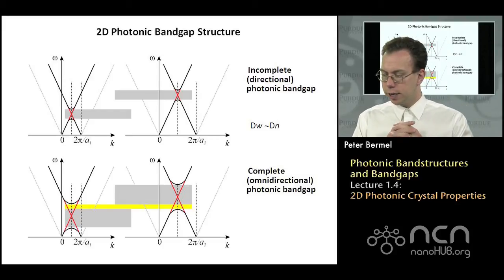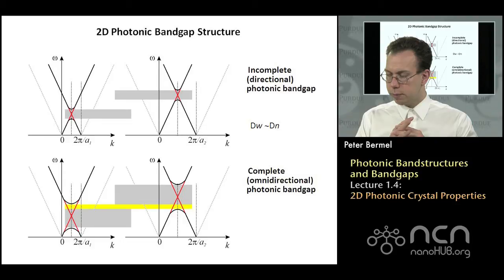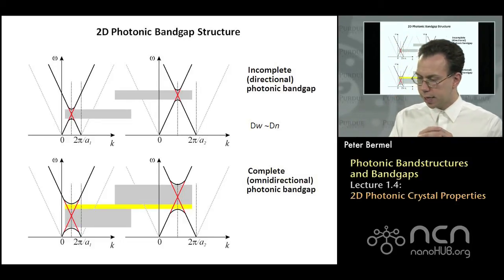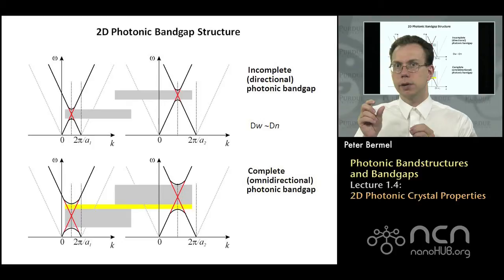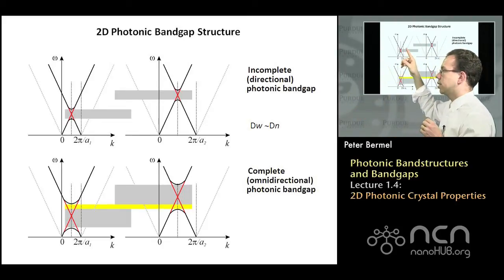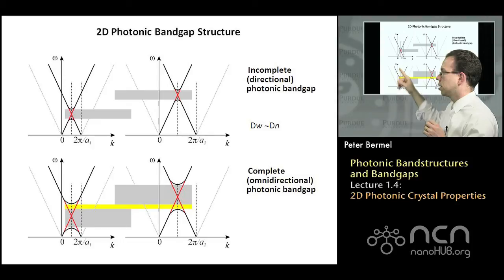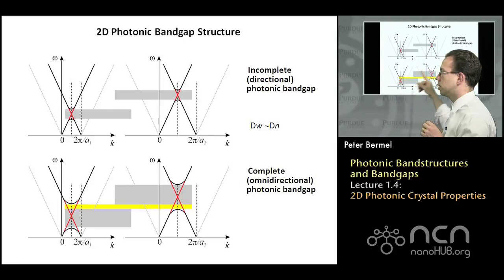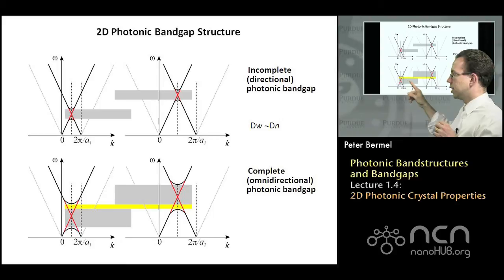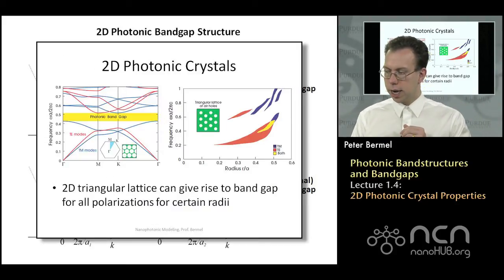When you modify spacings and increase index contrast, that gives rise to a larger off-diagonal matrix element epsilon-inverse(g, g'). As you increase the index contrast, you go from partial band gaps only at certain frequency ranges and k-vectors to band gaps that span a very large range. No matter what angle you're approaching from, you still see these band gaps, and the overlap between the gray regions from the two different A values is shown in yellow — the same yellow from the earlier diagram.